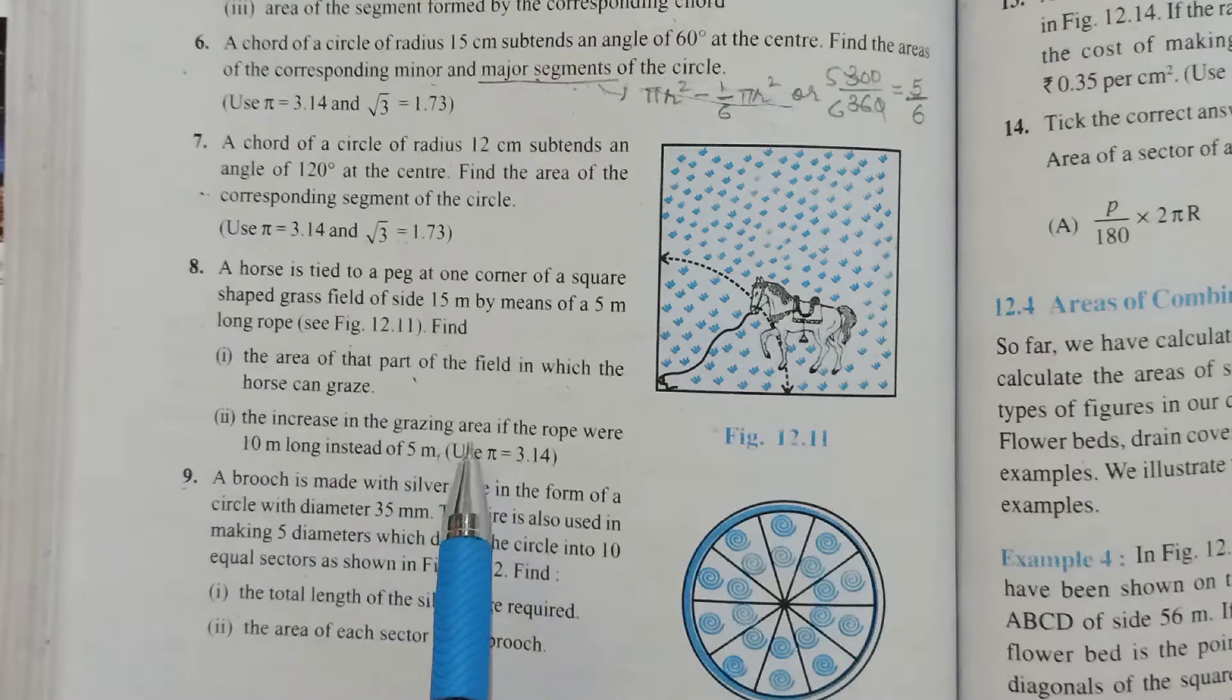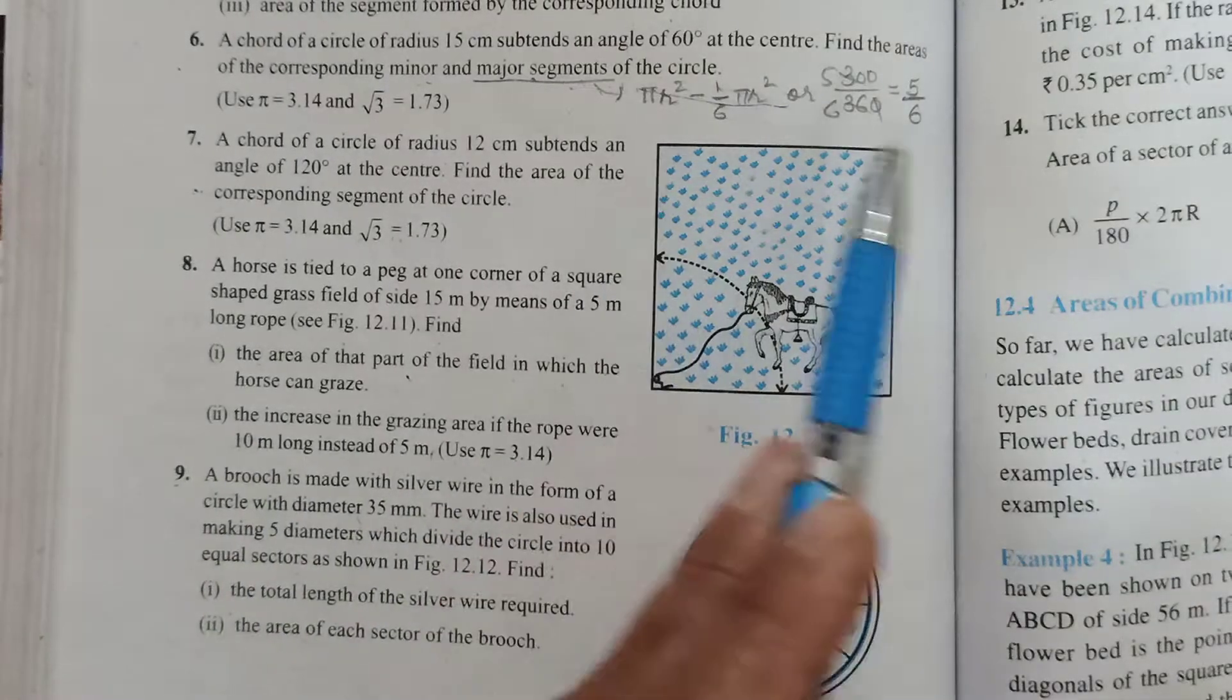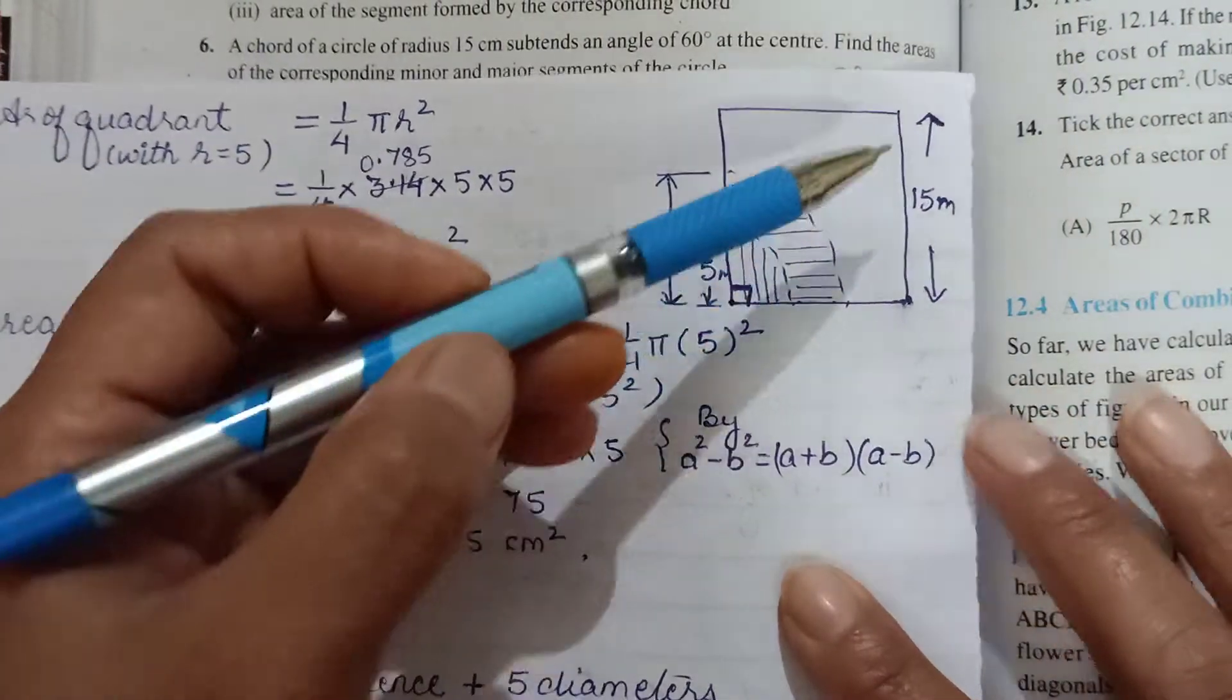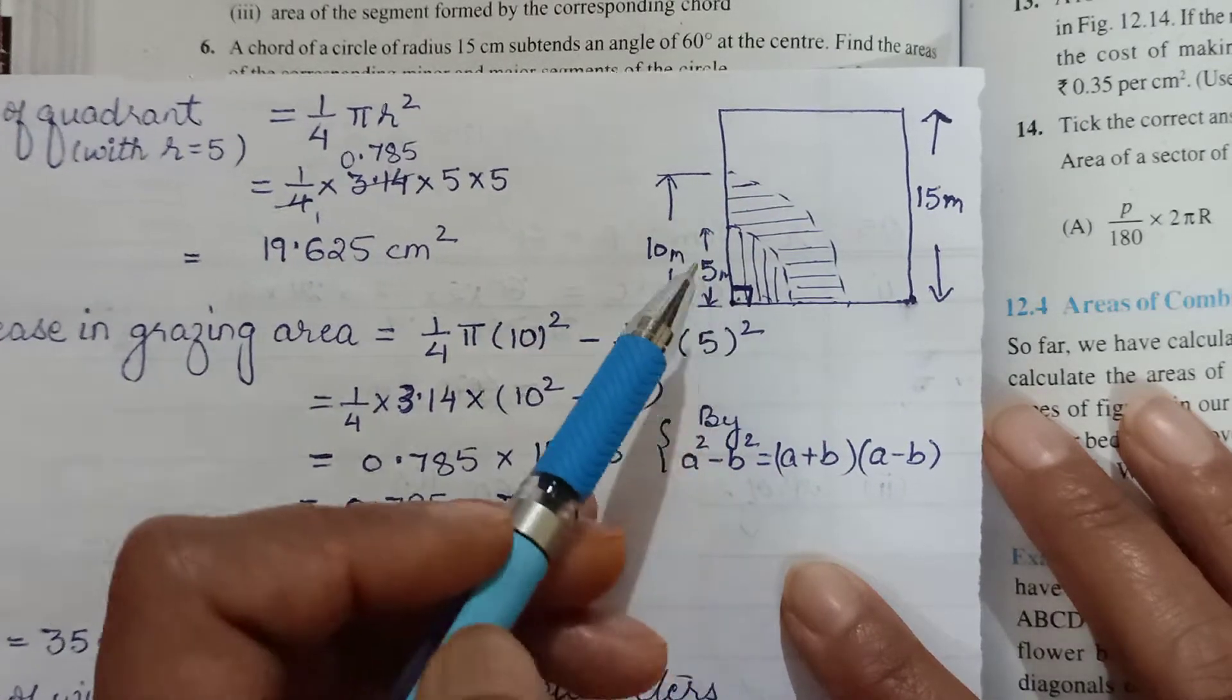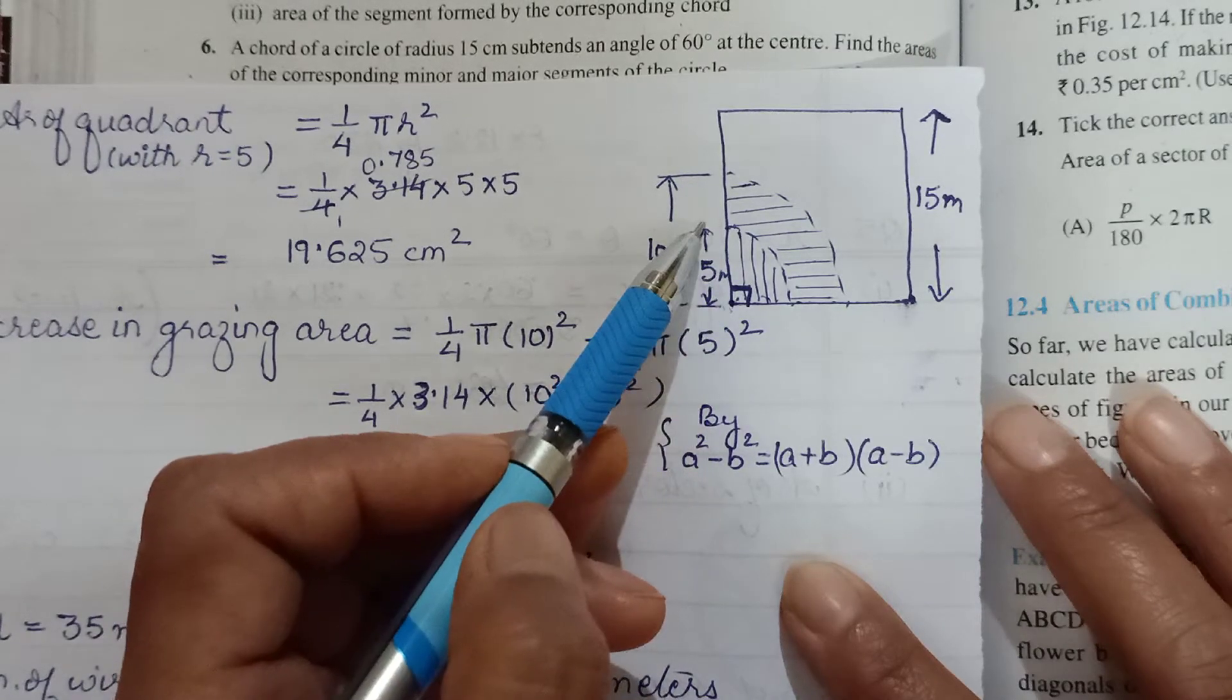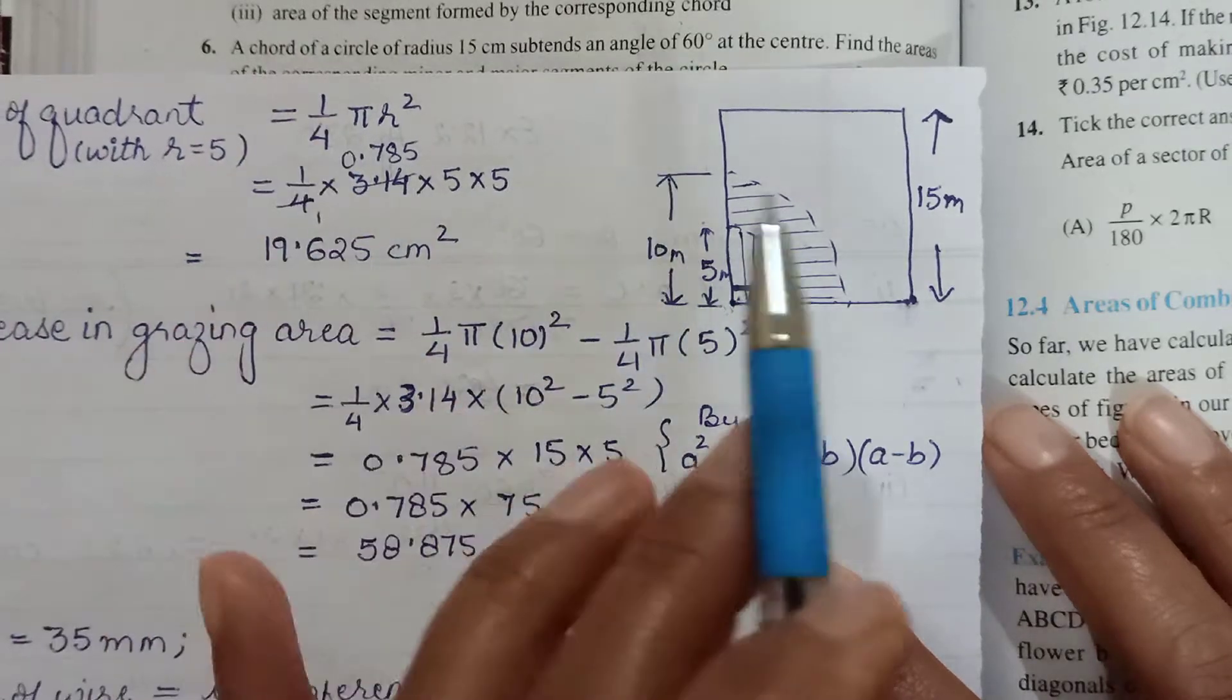You have to find the area of the part that the horse can graze, and also find the increase in the grazing area if the rope was now 10 meters long. They've given you the figure here, so I have also jogged it out. The square is of side 15 meters, all angles are right angles, 90 degrees each.